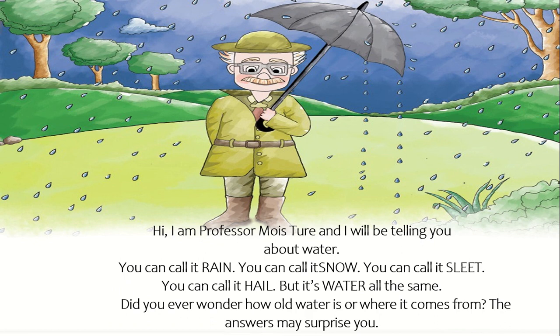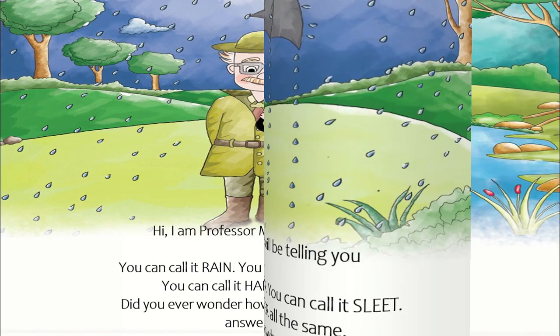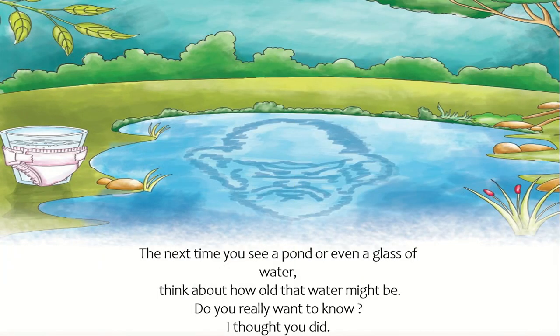You can call it rain. You can call it snow. You can call it sleet. You can call it hail. But it's water all the same. Did you ever wonder how old water is or where it comes from? The next time you see a pond or even a glass of water, think about how old that water might be.